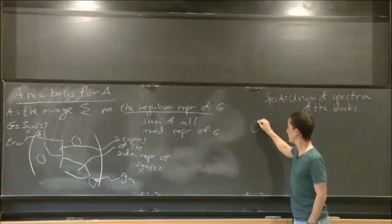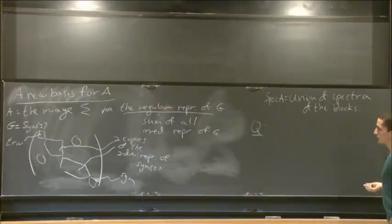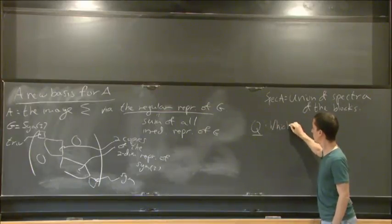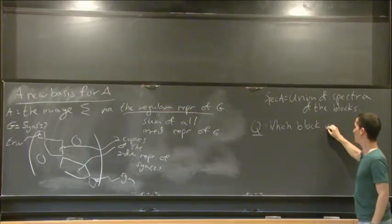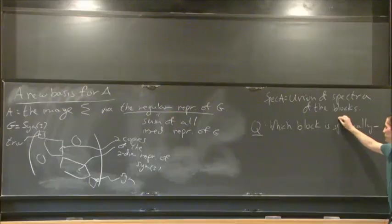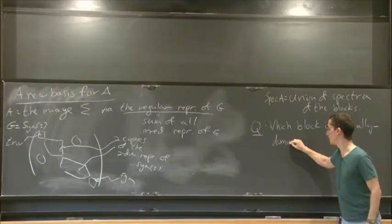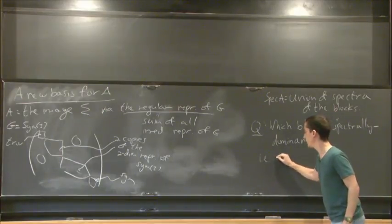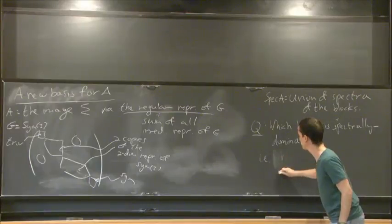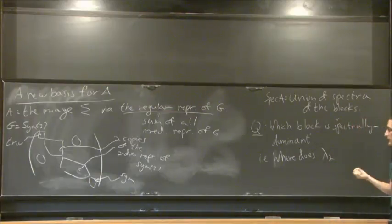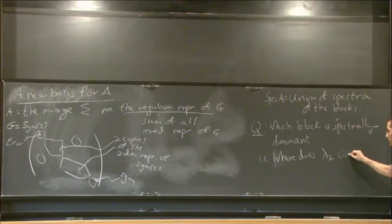So now the general question I want to ask is which block is, I would call it, spectrally dominant. That is, where does, from which, in other words, where does lambda two, the highest non-trivial eigenvalue come from?